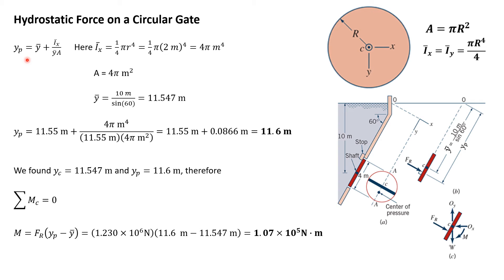Here we have ȳ, which is 10 meters over sine 60. I_x can be looked up in a table. I found that I_x and I_y equal πr⁴/4, where r is the radius. In our situation, it's 1/4 times πr⁴, and r is 2 meters. When you multiply this out, you get 4π meters⁴. The area is 4π meters².